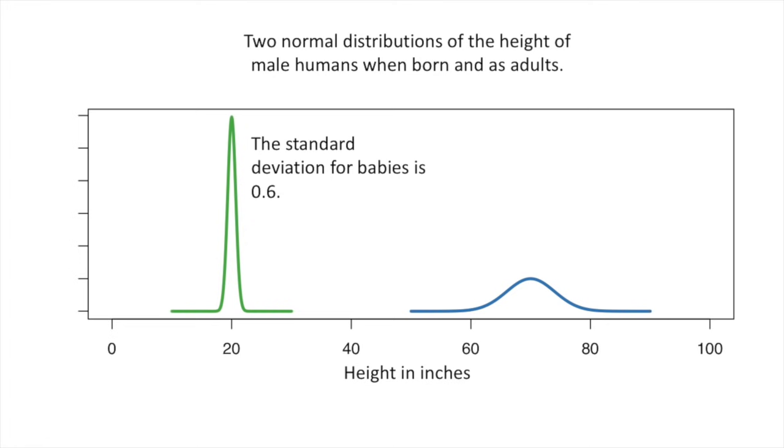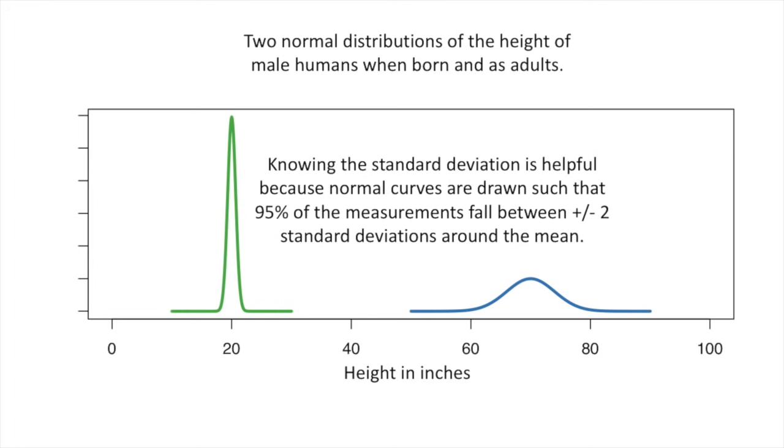The width of the curve is defined by the standard deviation. We can tell just by looking at the curves that babies have a relatively small standard deviation compared to adults. The standard deviation for babies is 0.6. The standard deviation for adults is 4. Knowing the standard deviation is helpful because normal curves are drawn such that 95% of the measurements fall between plus or minus two standard deviations around the mean.